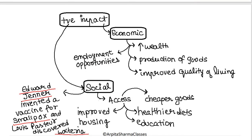There were positive impacts of the Industrial Revolution. Because the factory system became mechanized and machines were used, wealth increased, production of goods increased, and quality of living improved because employment opportunities were created. People could purchase houses, access education, and switch to healthier diets because they were earning well. Goods were cheaper. There were also innovations in health — for example, Edward Jenner invented a vaccine for smallpox, and new kinds of bacteria were discovered by Louis Pasteur. In the medical field, inventions grew because of new machines and R&D.